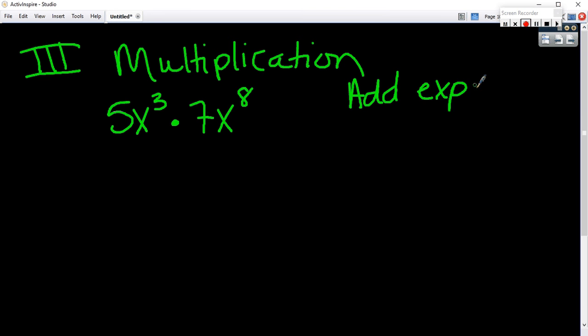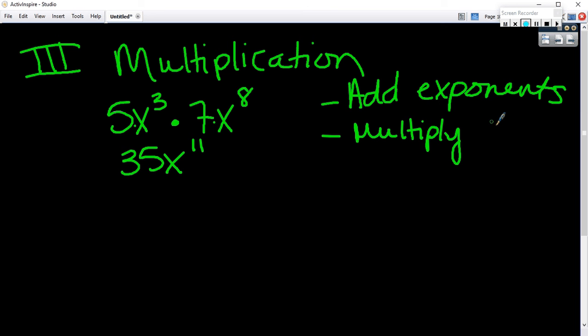We know we add the exponents. What about those numbers in front? You multiply them, right? And because multiplication is commutative, I can do the 5 and the 7 and get 35x to the 11. So I add the exponents and I multiply coefficients. So it doesn't have to be the same. Right. That's only with addition subtraction.